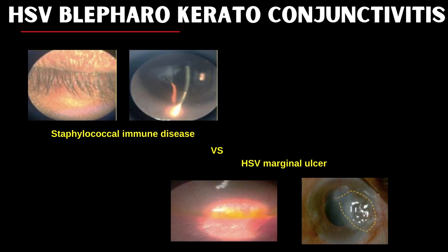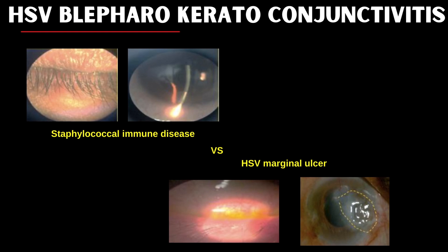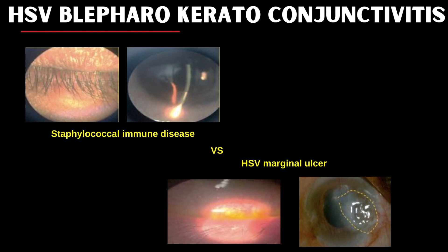The peripheral ulcer in HSV is also quite aggressive. This is the primary form of HSV and it is important to distinguish between these two as our treatment depends on it. Steroids are usually the first line of management for staph immune disease, whereas use of steroids can flare up HSV blepharokeratoconjunctivitis, where the treatment is antiviral agents.